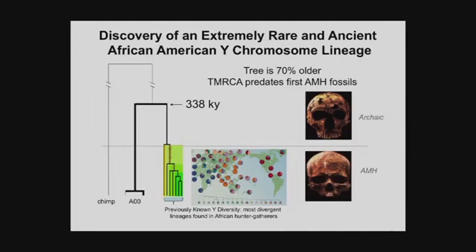I want to digress for a moment about a very interesting story that came up involving the Y chromosome — specifically, the discovery of a very rare and ancient Y chromosome that didn't fit into the known picture of Y chromosome diversity. Many years of research on the Y chromosome told us it was very much like mitochondrial DNA: all Y chromosome variation today traces back to a very recent single ancestor that lived in Africa about 100,000 to 140,000 years ago.